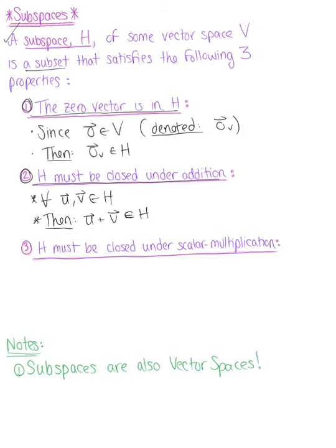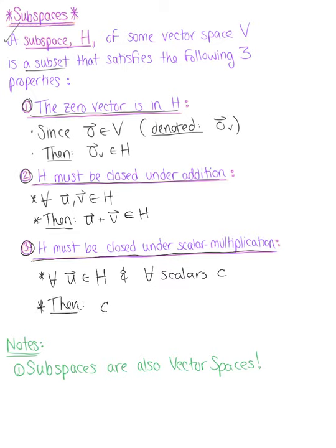That's the same definition we looked at with vector spaces. Property three: the subspace must also be closed under scalar multiplication. For all vectors U in our subspace H and for all scalar multiples C, the scalar multiple C times vector U is also in the subspace.